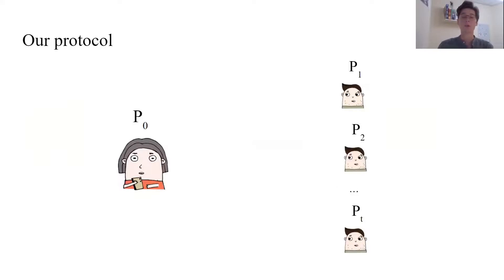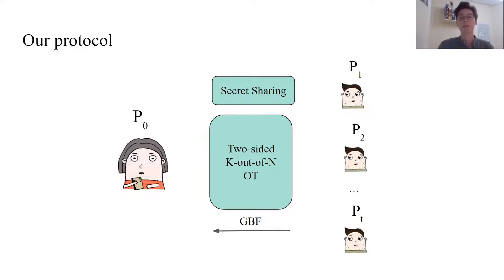In a nutshell, our protocol is the following. First, parties make the secret sharing of their GBFs. Then, each party Pi has two-sided K out of N OT with the designated party P0. Afterwards, each Pi makes the local computation recalculating the new GBF and sends it to the designated party directly. P0 locally XORs all GBFs received and computes the intersection of all the parties. The secret sharing and all rounds of OT apart from the last one are performed in the offline phase. Thus, the online phase has only two rounds.